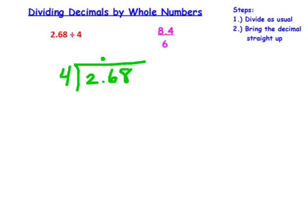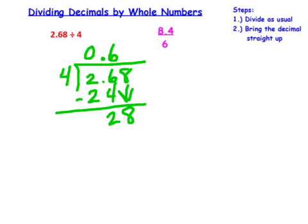4 goes into 2, 0 times. Into 26, 6 times. Subtract down. You're just ignoring your decimal here. Drop your 8. 4 goes into 28, 7 times. Subtract down and you're done. Your answer is 0.67.